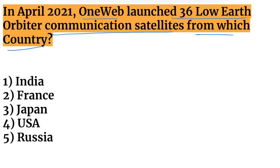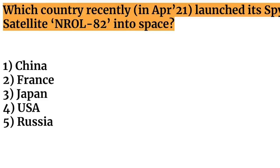In April 2021, OneWeb launched 36 LEO — Low Earth Orbit — communication satellites from Russia.